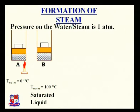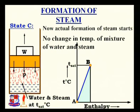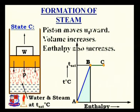If we start heating the water again at 100°C — that is, the saturated liquid — we will get wet steam: a mixture of water and steam at state C. The temperature of the mixture remains the same, at the saturation temperature. At state C, the actual formation of steam has started. There is no change in temperature of the mixture of water and steam. The horizontal line from B to C on the temperature-enthalpy diagram shows the formation of steam. The piston moves upward, volume increases, and enthalpy also increases.